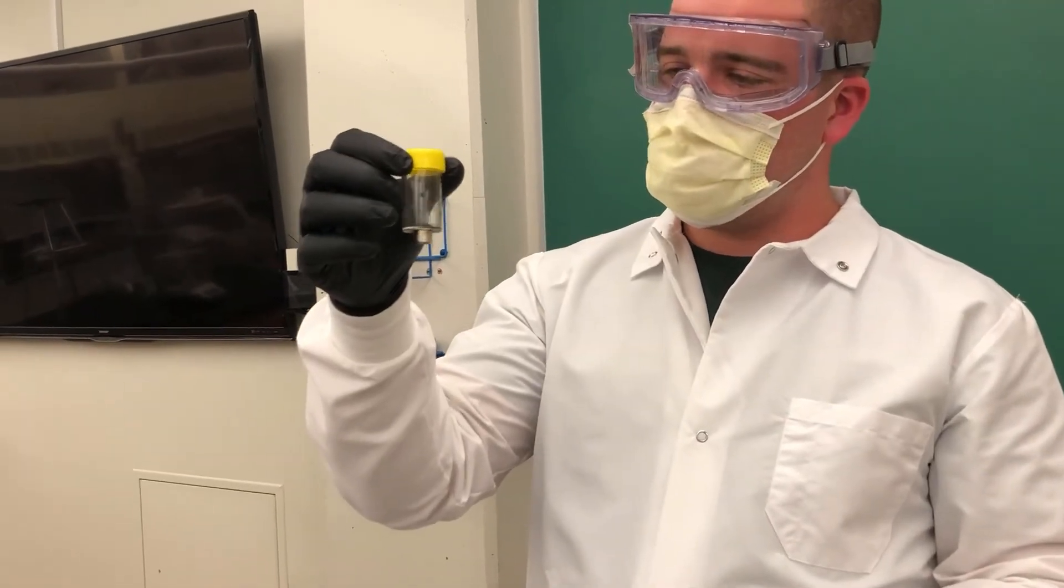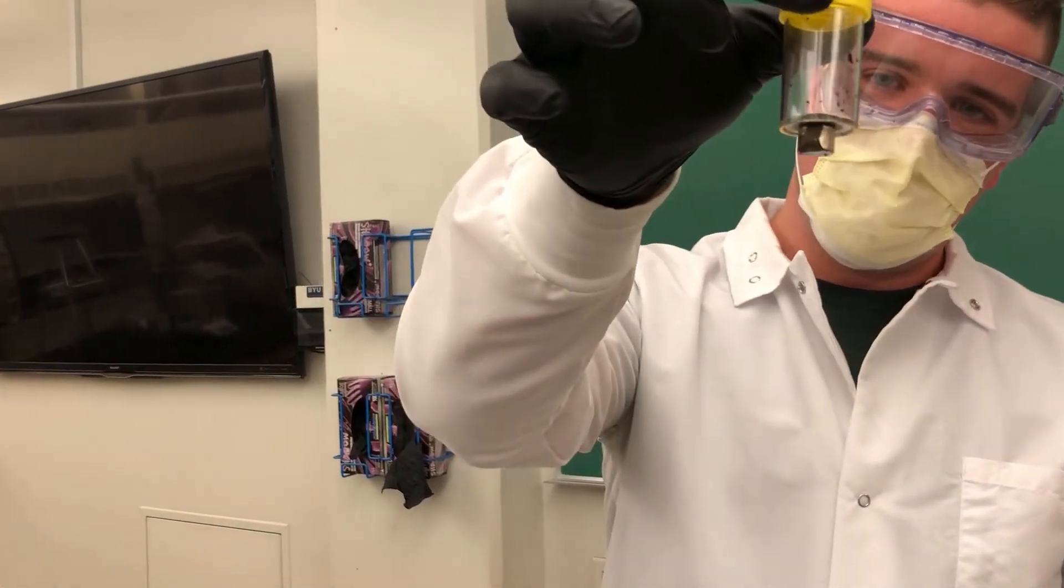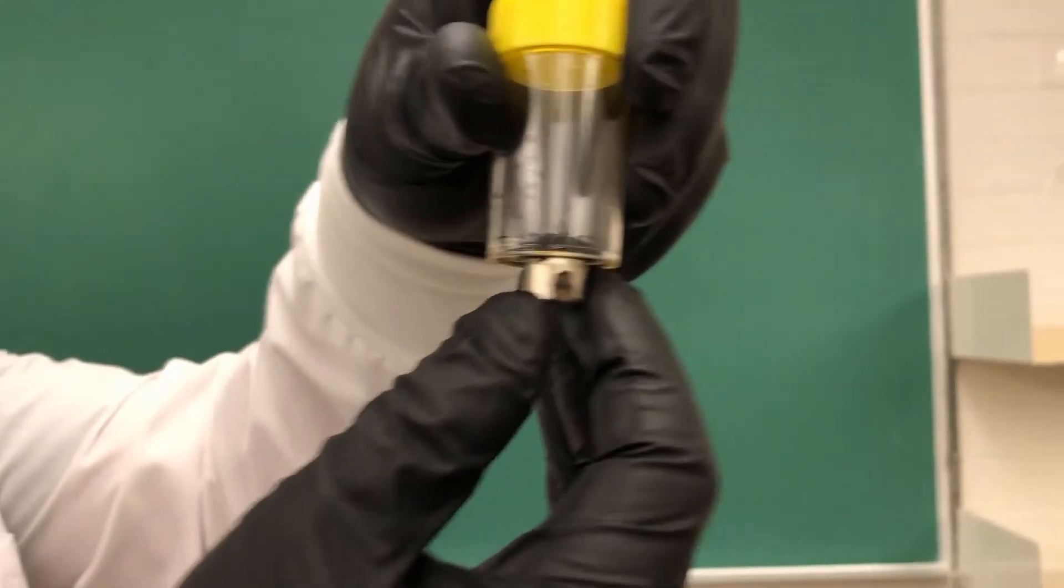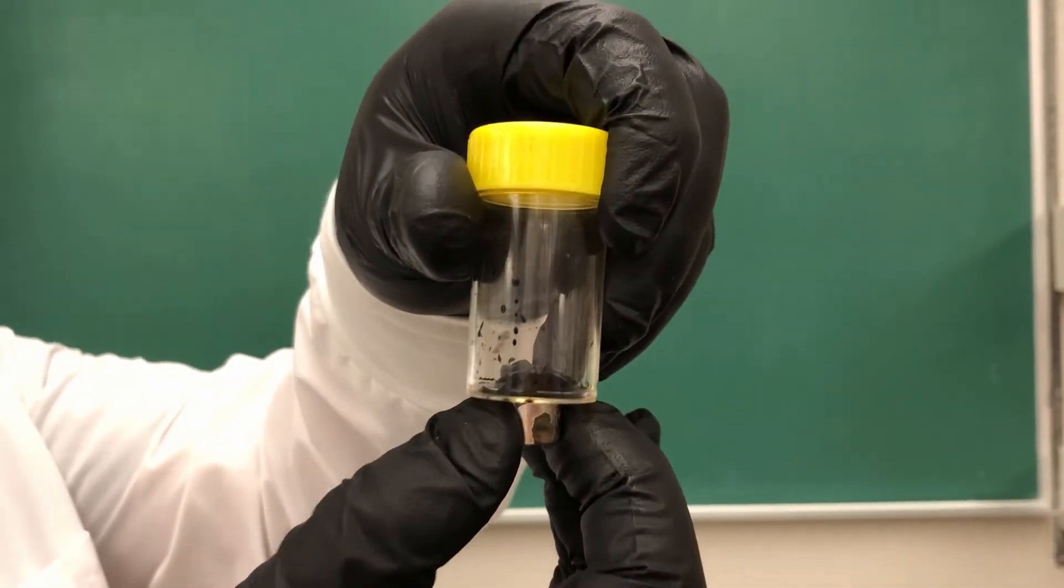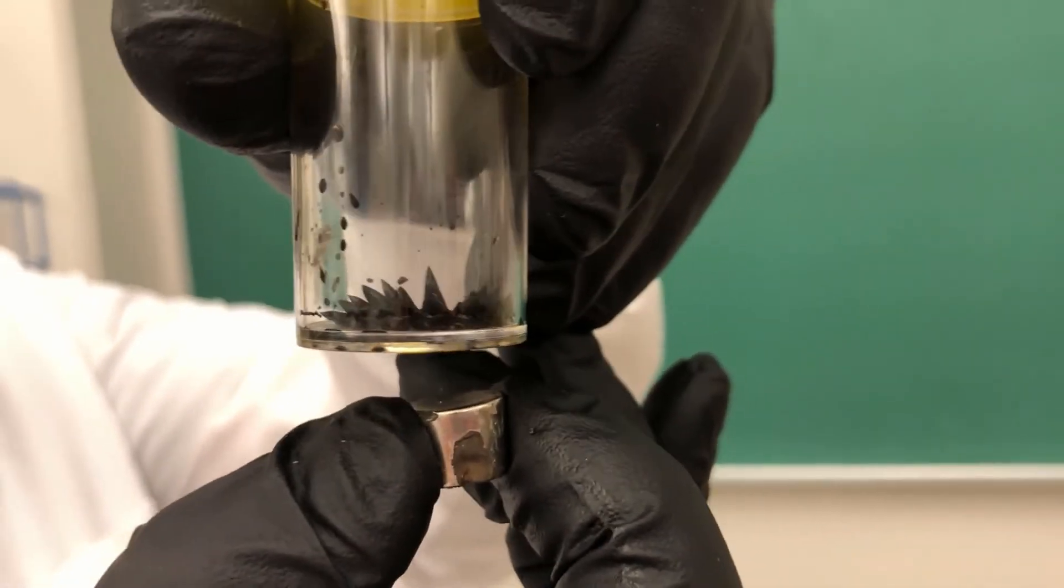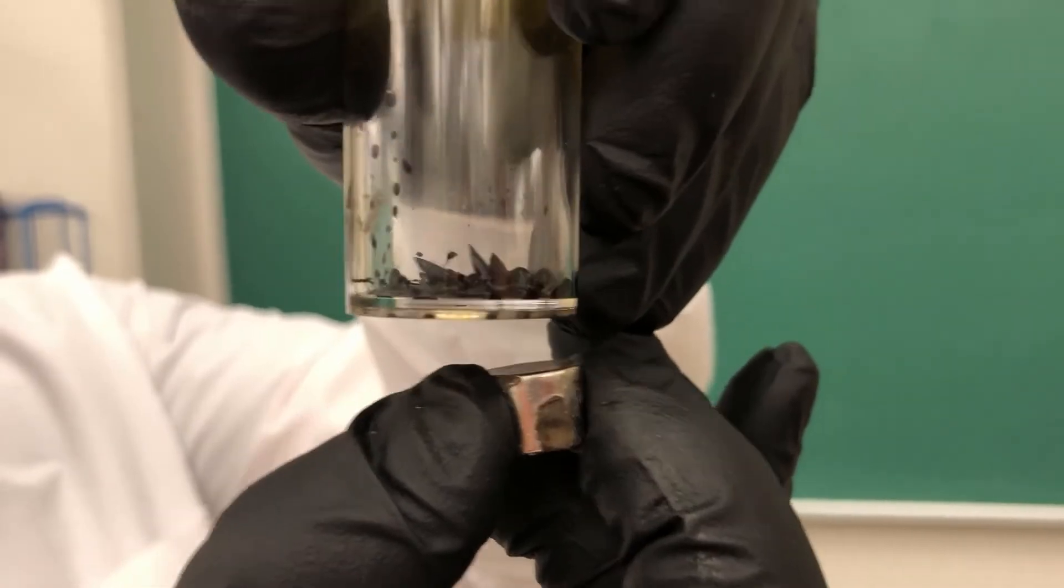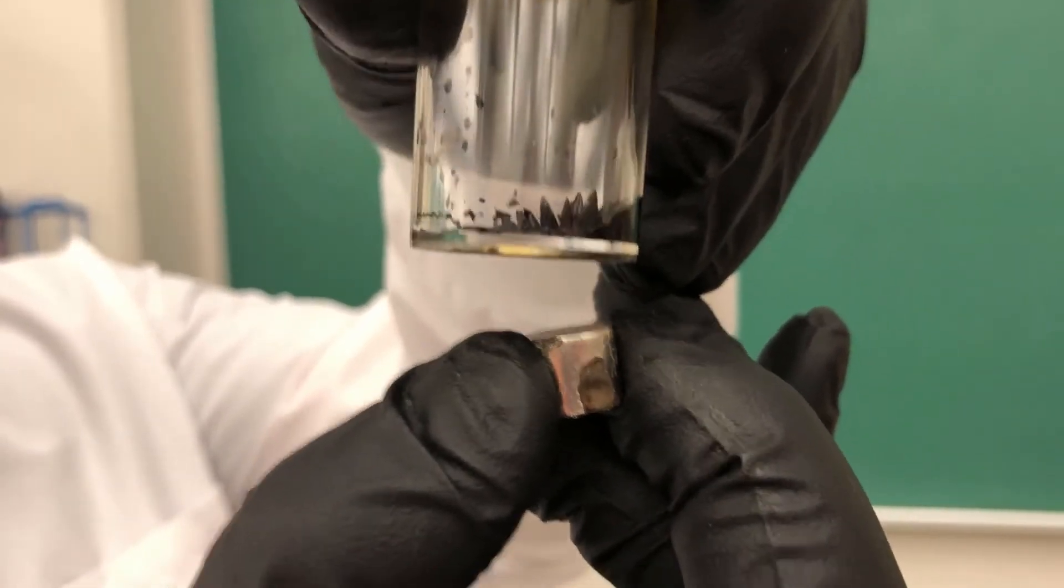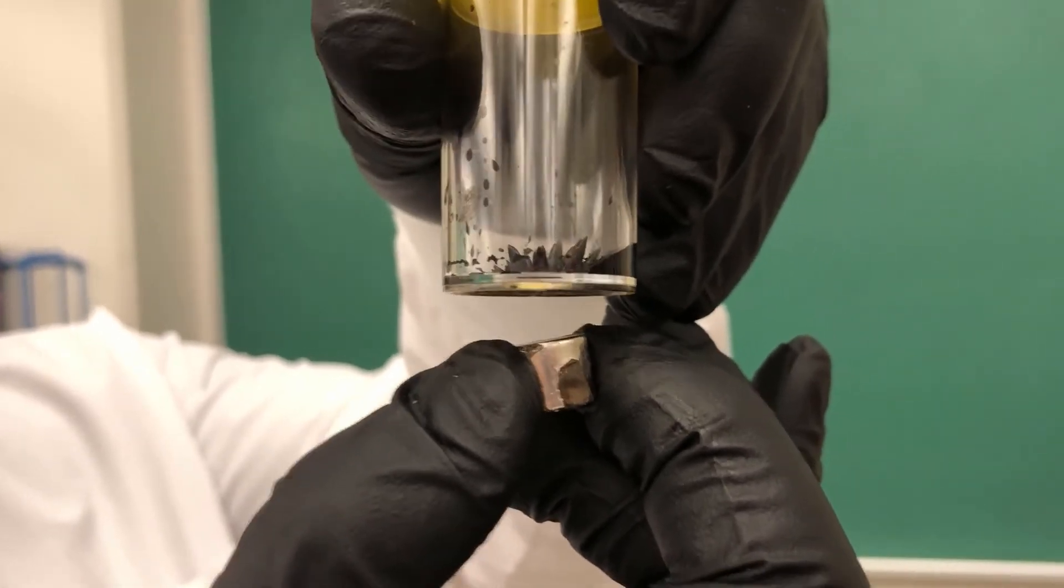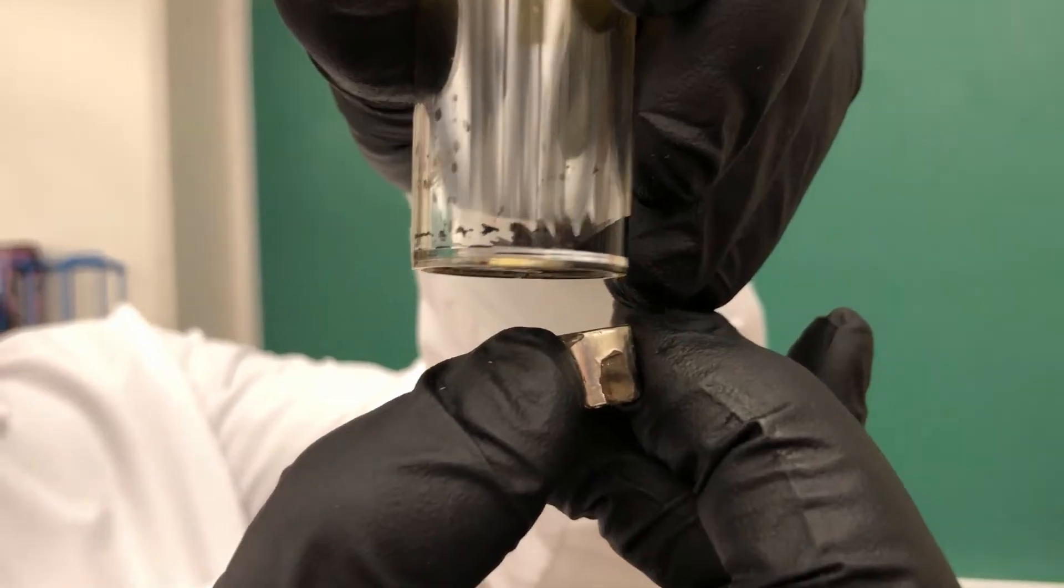Okay. So as you can see, we've completed our ferrofluid as you can see here. It doesn't look like it's doing much but if we hold the magnet about a centimeter under it, you can see it starts to form spikes and it changes as I move the magnet. So that's pretty cool.